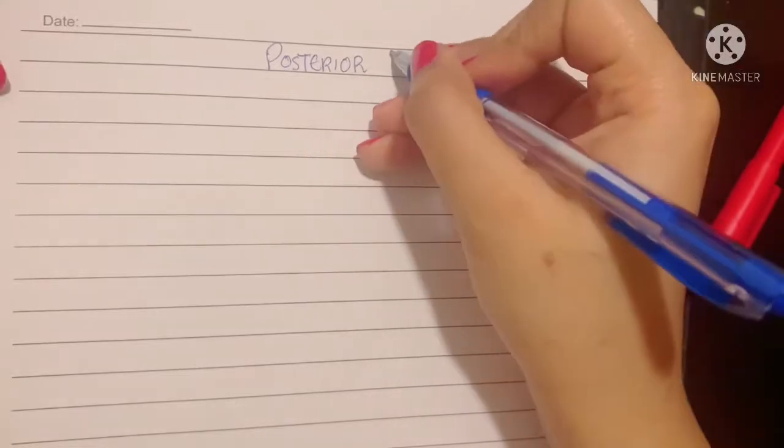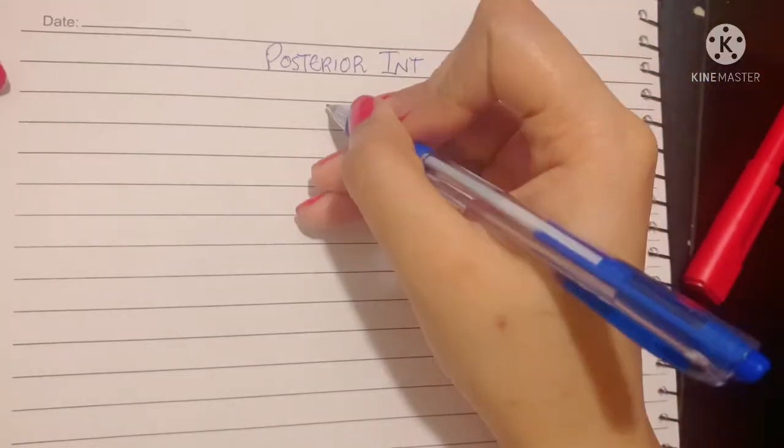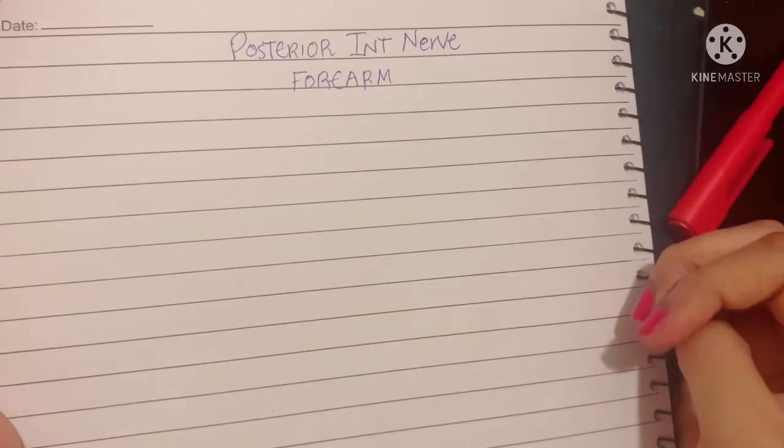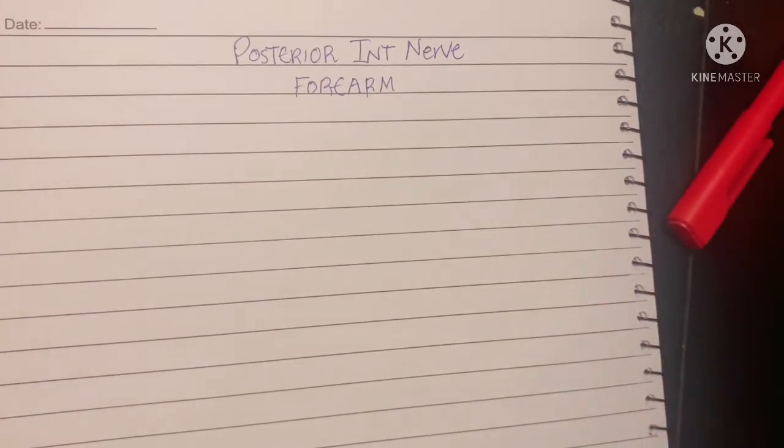Now let's talk about the main nerve of the back of your forearm. The posterior interosseous is your sole nerve, main nerve of the back of the forearm.